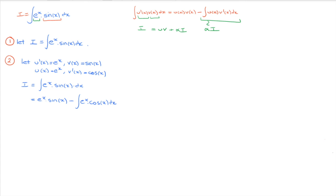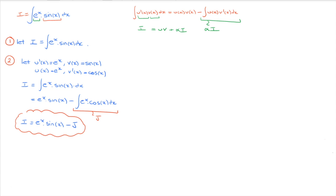We now name this second integral — the integral of e^x times cosine of x — capital J. So at the end of step two we have: I equals e^x times sine of x minus J. We'll box that result and call it equation 1, or E1. That's step two done.